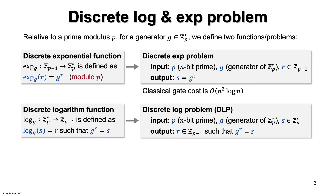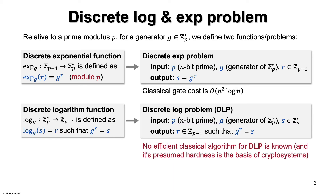Now let's consider the discrete log problem, often abbreviated as DLP. The input is P, an n-bit prime, G a generator of Z*P, and S an element of Z*P. The output is the R in Z for which G to the R is S. No classical polynomial time algorithm is known for this problem, and the presumed hardness has been the basis of cryptosystems such as the Diffie-Hellman key exchange protocol. Remarkably, there's a quantum algorithm for the discrete log problem due to Peter Shor. The algorithm solves DLP at cost order n squared log n, which is polynomial scaling.